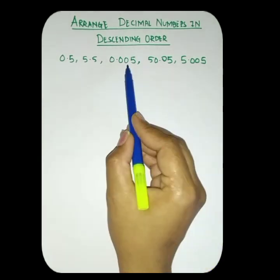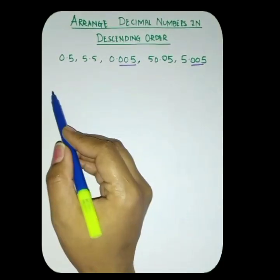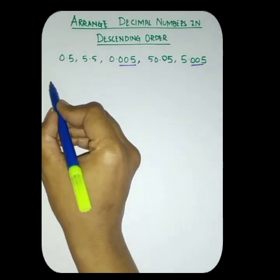If you observe, after the decimal point the maximum digits are 3 digits, right? So we'll convert all the fractions into 3 digits. We'll convert them into like fractions.